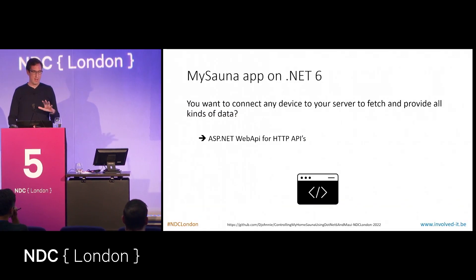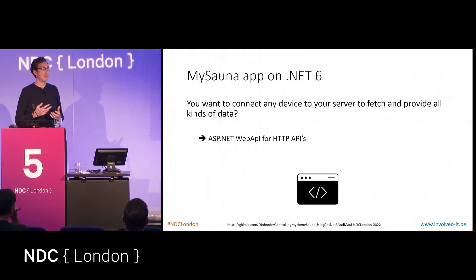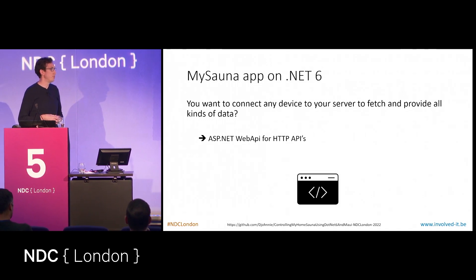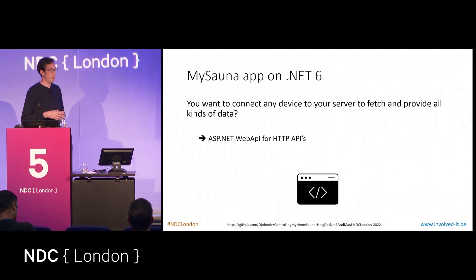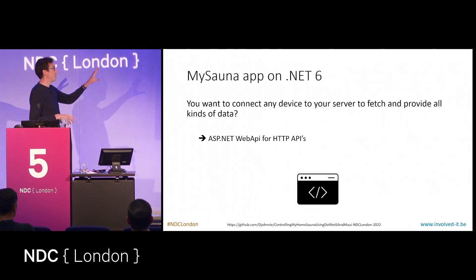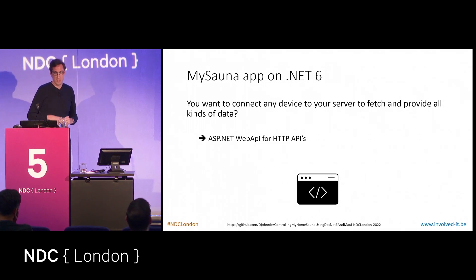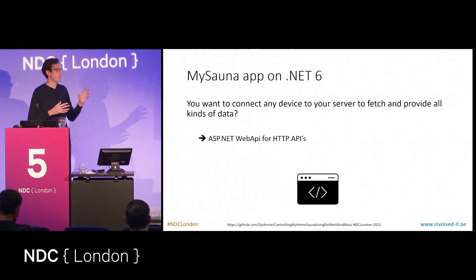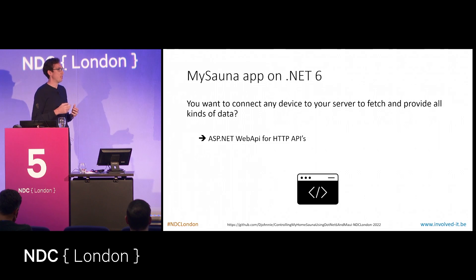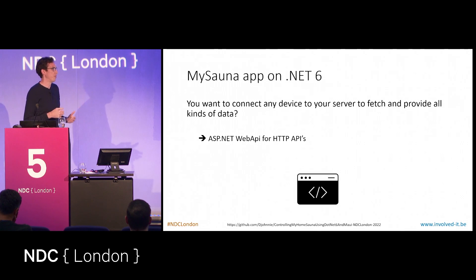So first, it all runs on .NET 6. I'm very happy that .NET 6 today is so easy to use. I've been using .NET since it came out in 2002, and it really feels like things are so easy for us developers, especially for creating these kinds of applications. The idea is that I use a Web API because I wanted to do session planning — instead of turning on the sauna immediately, I also want to be able to plan a session for tonight, for example.